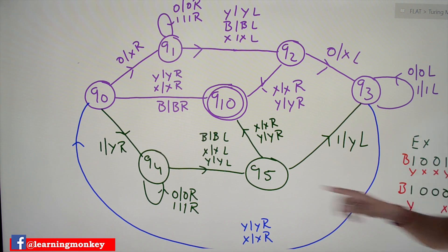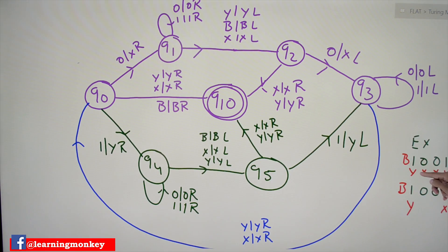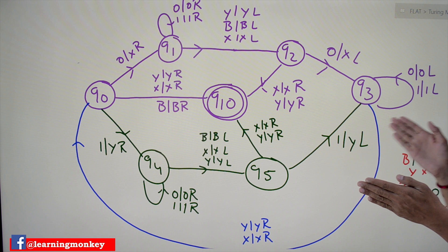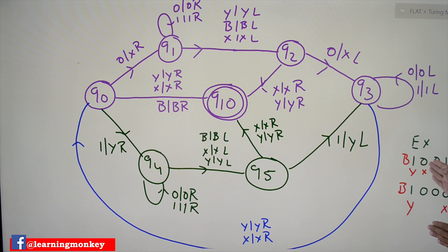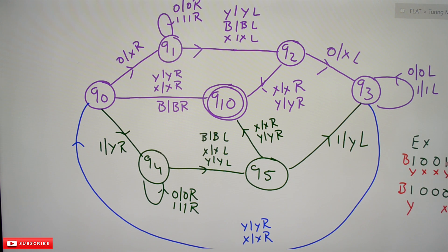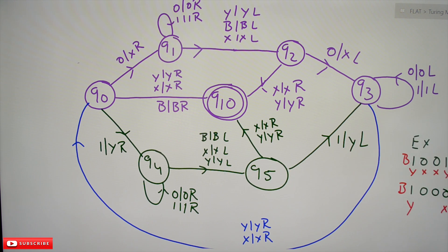It starts from q0. On q0, if you see '1', we convert it into 'y' and move to q4 state. q4 state moves towards the end of the string — we keep moving right until we see a blank. On q4, if you find zero, keep it as zero and move right; if you find one, keep it as one and move right. When you see blank, we move to q5 state and move left, now positioned at the last character. The first '1' must match the last '1'.